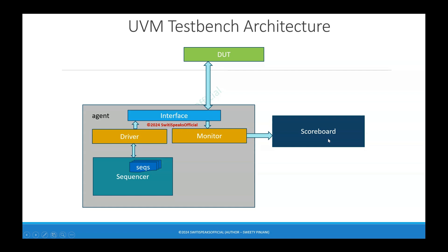When outputs do not match, it is not necessarily a design bug — there is also a possibility that there is a problem in your test bench. For example, maybe in your predictor you have done some miscalculation of the expected output, in which case you need to fix the scoreboard. If your prediction is correct and the output is still mismatching, then you debug and find which part of the design has the bug. The scoreboard is a very important component because it helps you find design bugs by comparing actual and expected output. We will cover the scoreboard in more detail in upcoming lectures.